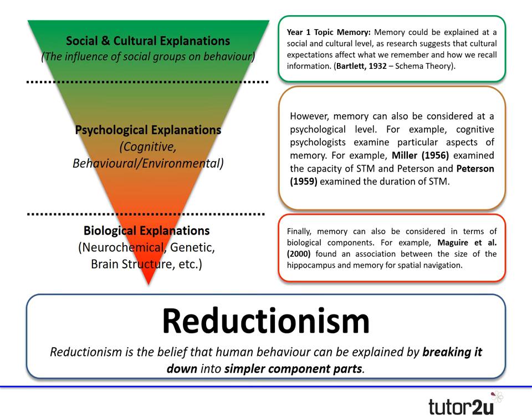Right at the top we could consider explaining memory in terms of social and cultural factors. Research argues that cultural expectations affect both what we remember and how we recall information. You may have come across the famous study by Bartlett, who looked at schema theory and how cultural expectations shape what we remember. It's nice to consider those different levels using that year-one example.